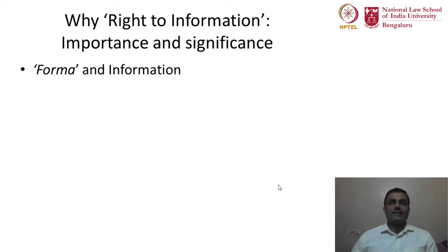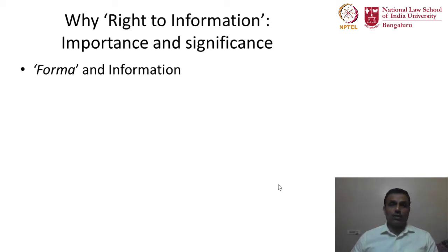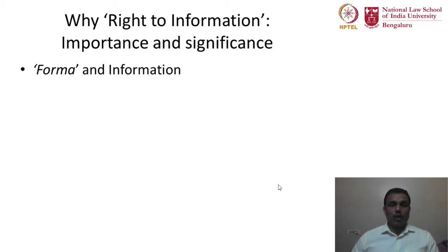The Right to Information is a right demanded from the government to share information about how it goes about its functionalities — how it exercises its powers, where taxpayer money is being utilized, and whether it is utilized effectively. The right to information is quite an inherent human right. It was never defined in the Constitution originally, but was read into it as a human right under Article 19(1)(A) of the Constitution of India — the right dealing with freedom of speech and expression and freedom of press. The unenumerated part of it was the right to information that was read into it.